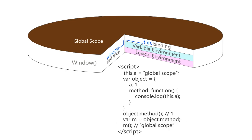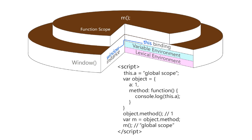As execution continues going down the script, it will eventually arrive at calling this function again, but this time from the global scope. What's going to happen is another execution context will be created — these won't be stacked on top of each other because as soon as the first one finishes returning, it disappears. There are cases where you can build these execution contexts into the stack by continuing to call a function inside a function.